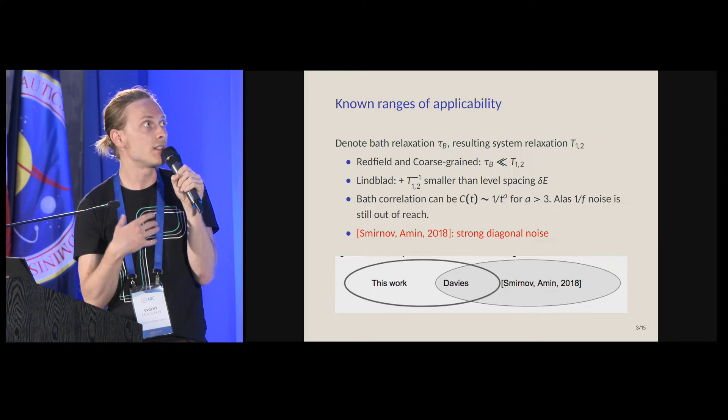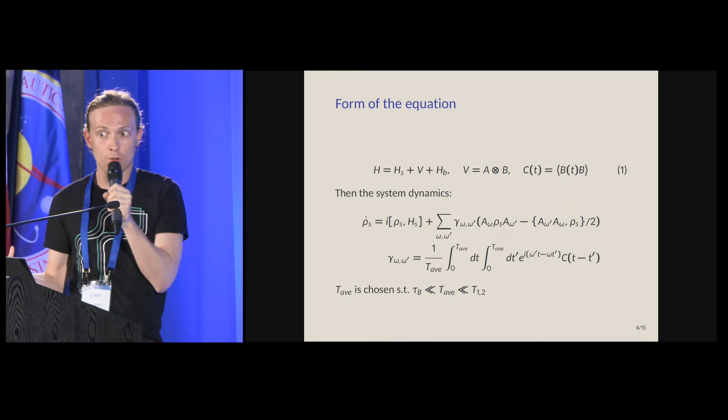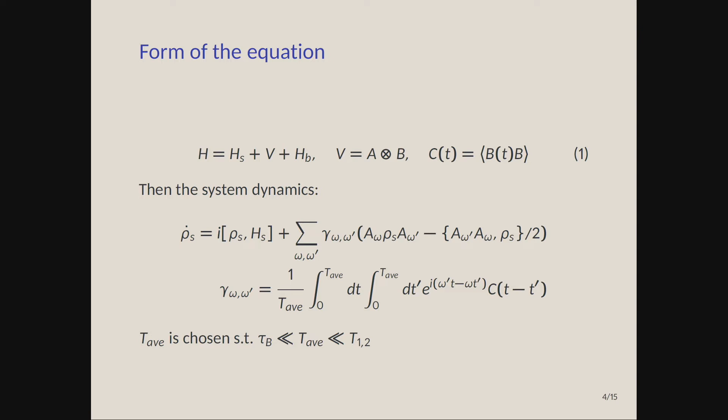I think of their work with respect to ours as branching out into different directions, and the only place where they really overlap is the Davies rates. I have to show you the equation. We are talking about a system and the environment coupled for simplicity through one term: a tensor product of an operator acting on the system A and operator acting on the environment B. There is a correlation function of the environment that's defined.